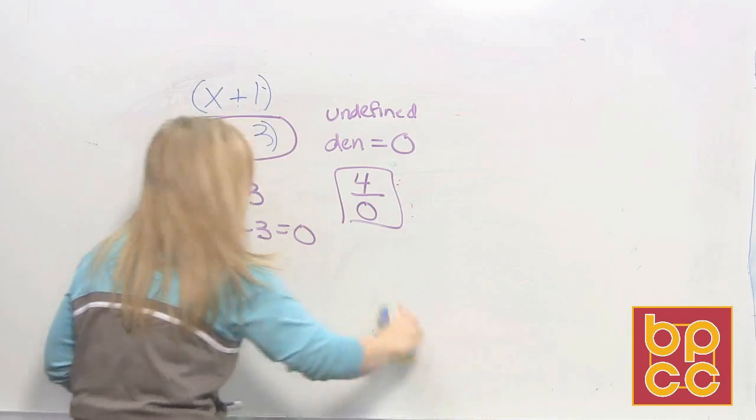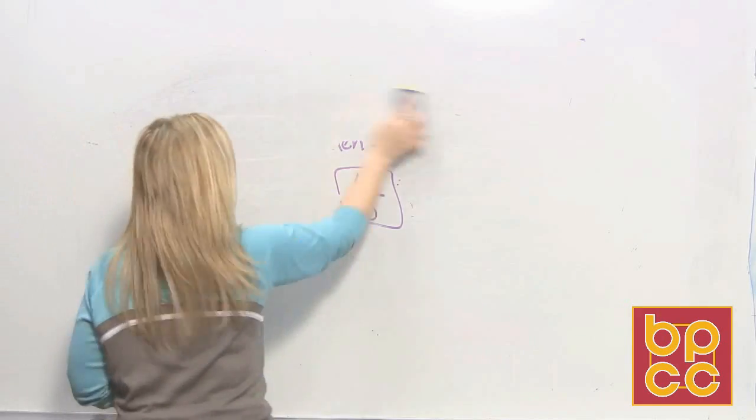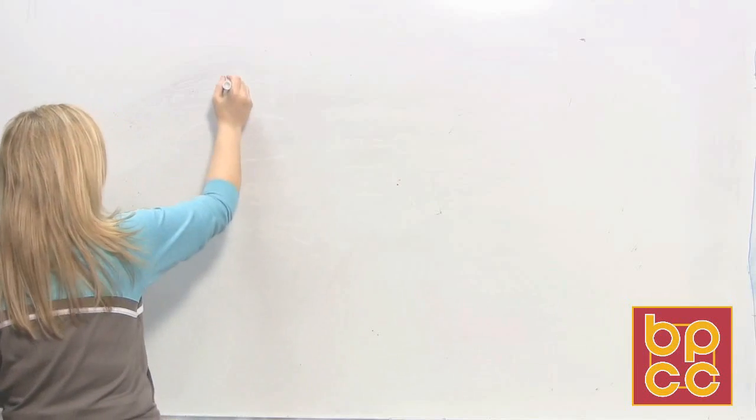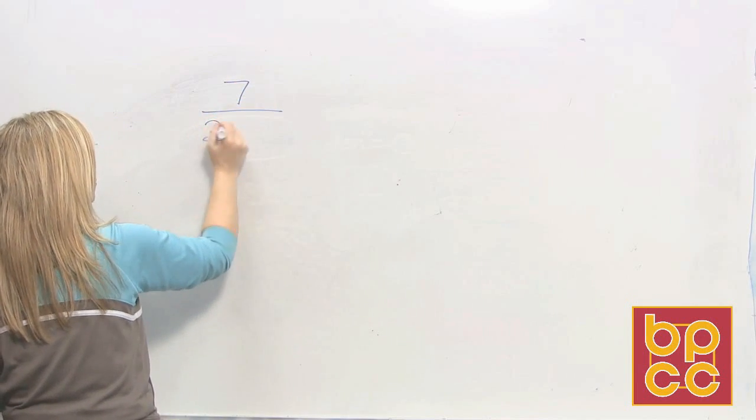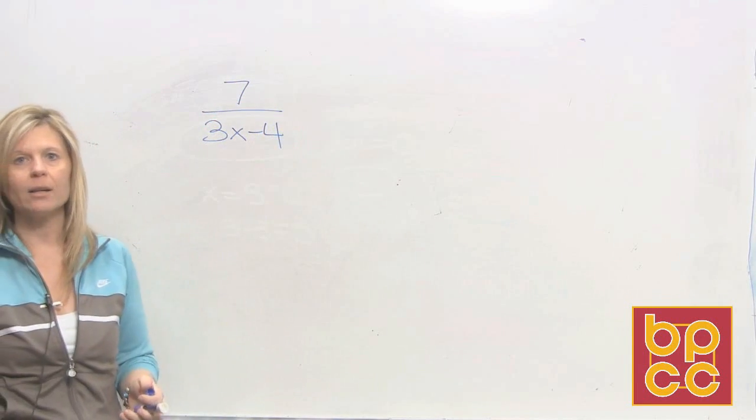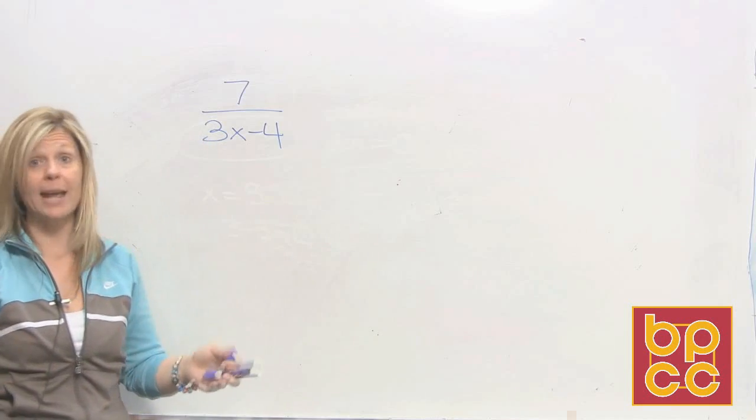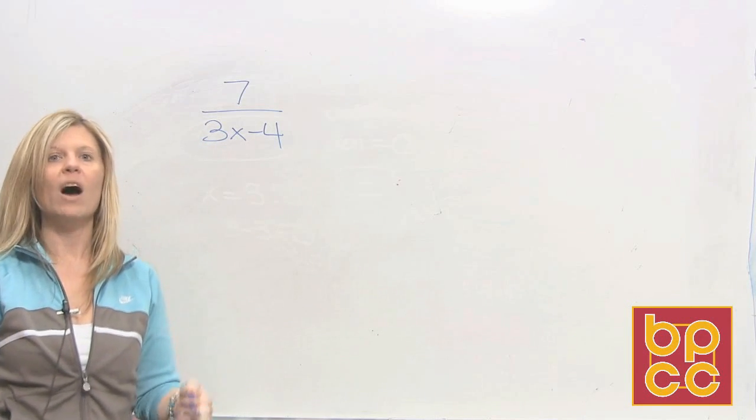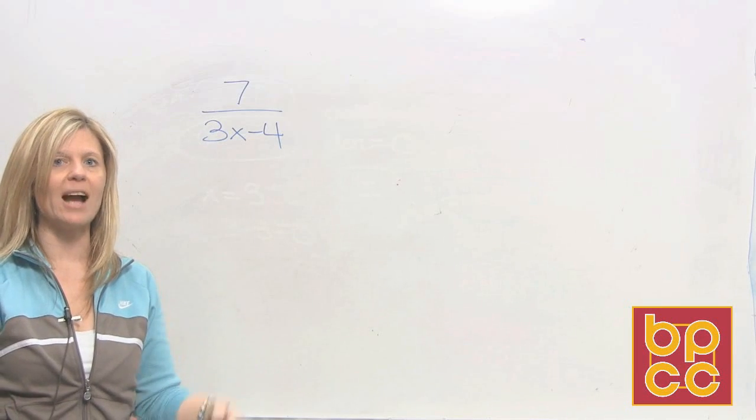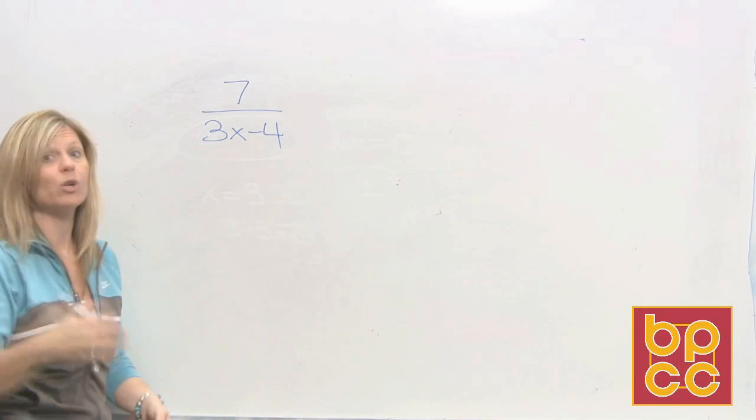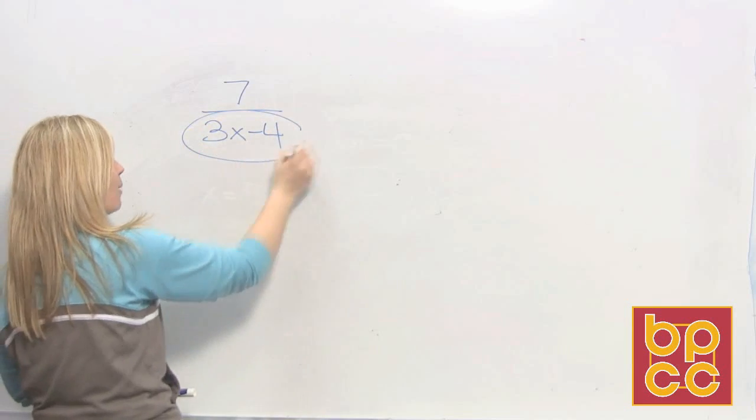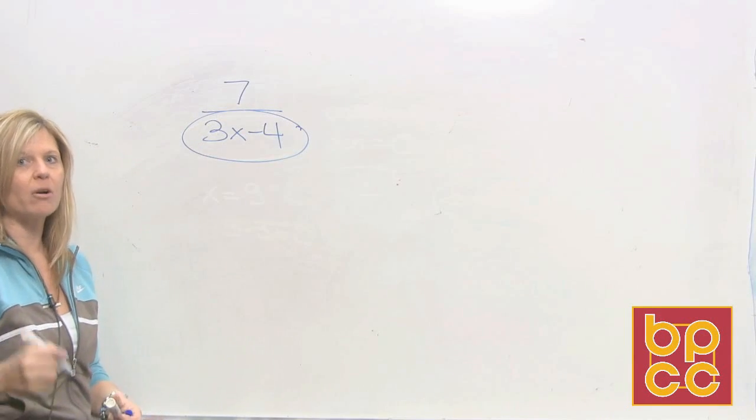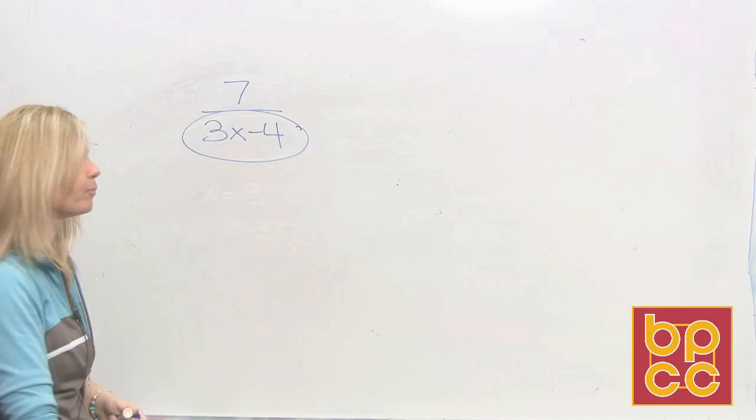Okay, let's look at another example in our class notes. Okay, let's look at example five. It has seven over three x minus four. Again, this is in lowest terms. You can't do any dividing to reduce it. So the question asks, what value of x makes the fraction undefined? So again, when you hear the word undefined, you're just looking at the denominator. And undefined means, what makes the denominator equal zero?